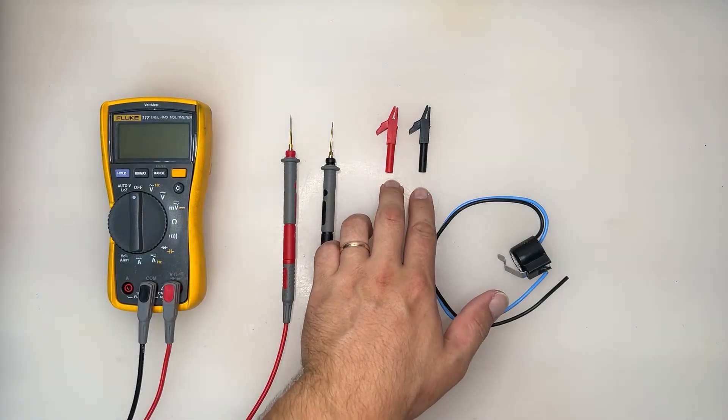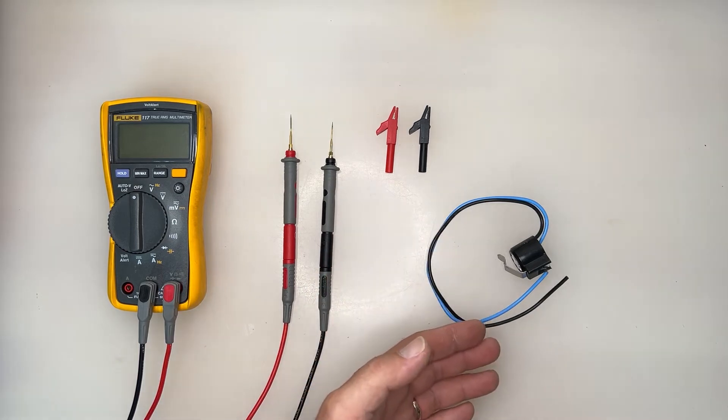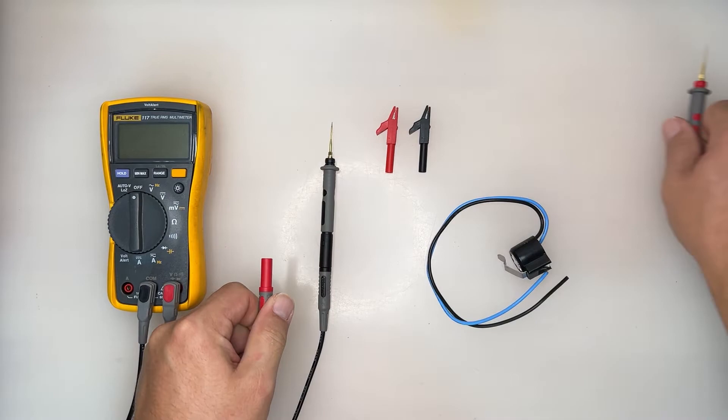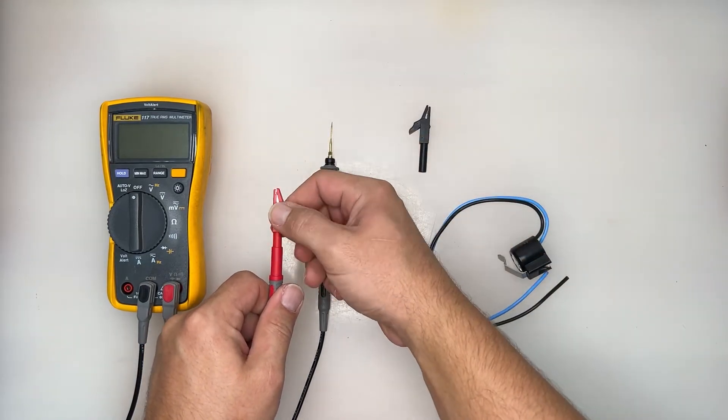Multimeter, alligator clips, bi-metal thermostat. Not all fridges are created equal, but they all contain this very important component called the bi-metal thermostat.